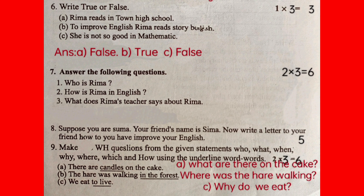Number 8 — suppose you are Shuma, your friend's name is Shima. Now write a letter to your friend about how you have improved your English. The hare was working in the forest — where was the hare working? We eat to live — why do we eat? WS questionnaire answer.